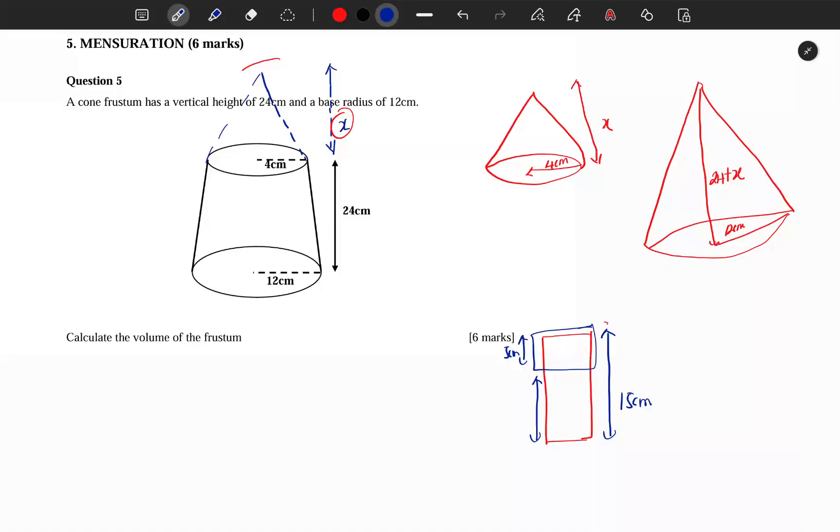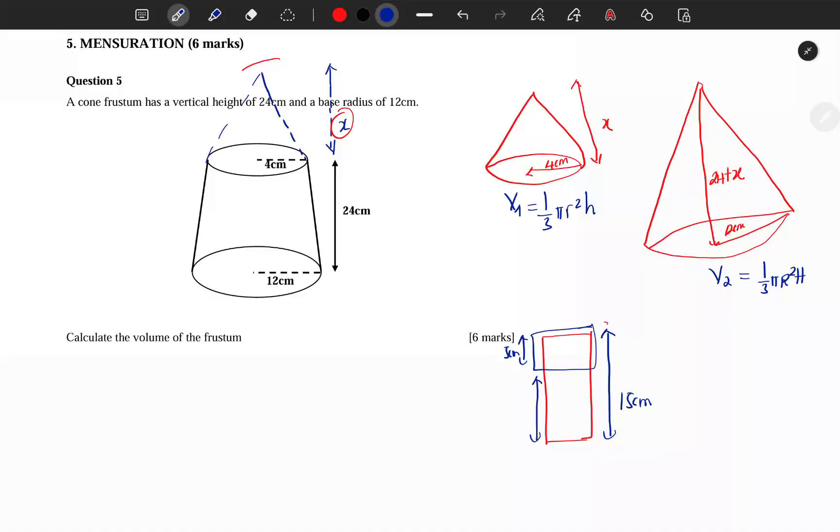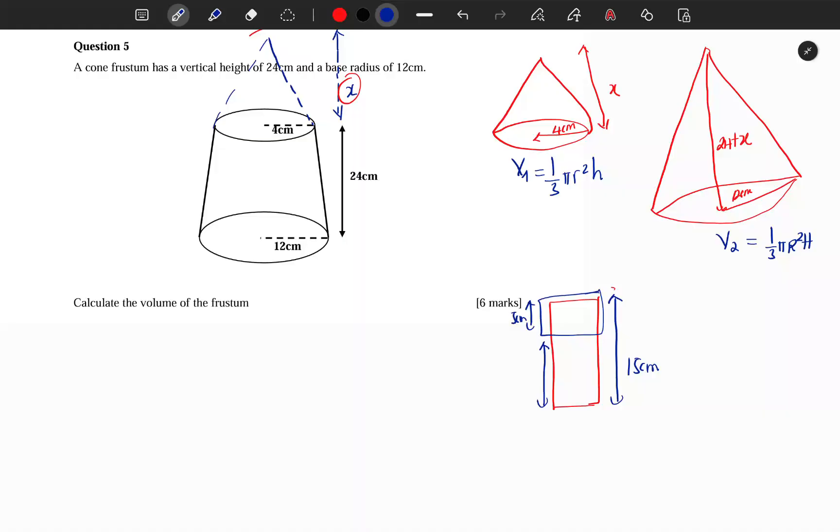You get the concept - where the cone is coming from. So to find x, you need that x to be known because the formula is 1 over 3 pi r squared h. Same thing here, it's 1 over 3 pi, let's use capital R squared and capital H. Once you find them, you're good, but remember that the height here is x, so it's a must that you find x. And remember that the height here is 24 plus x, so it's a mandate that you find x.